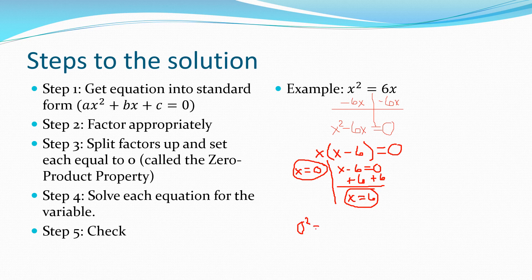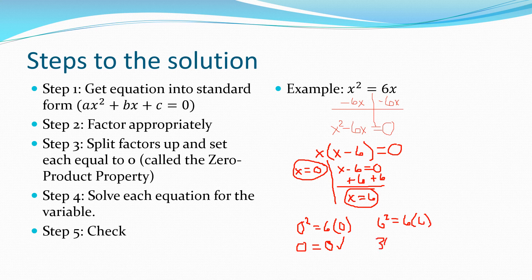And x equals six. Then I go back to check the original equation. Zero squared equals six times zero — zero equals zero, it checks out. I also check the second answer: six squared equals six times six — 36 equals 36, that works. So my two answers are x equals zero and x equals six.